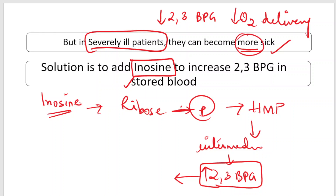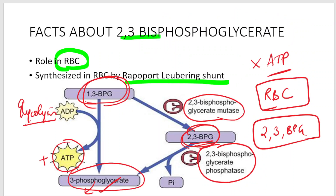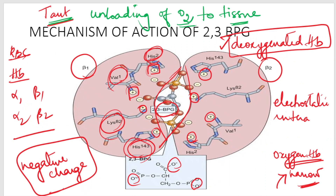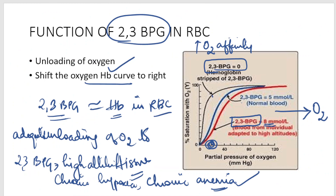In summary, we have covered the significance of 2,3-BPG, where it is synthesized via the Rapaport-Luebering shunt, its mechanism of action in hemoglobin, and its function in oxygen delivery. 2,3-BPG levels shift the oxygen dissociation curve to the right, causing more unloading of oxygen to the peripheral tissues.